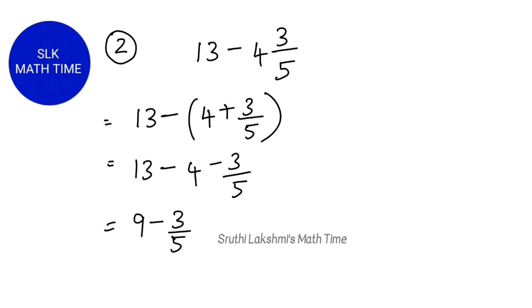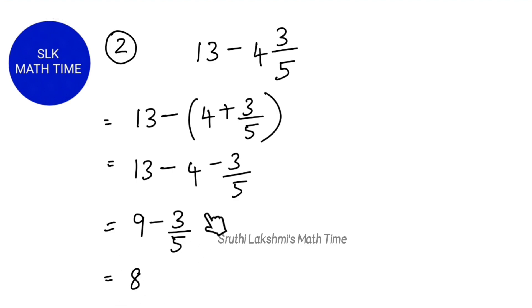So now we have 9 minus 3 by 5. What is 1 less than 9? 9 minus 1 is 8, so we write down 8. And then 5 minus 3 is 2, so we get 8 and 2 fifths. The answer here is 8 and 2 fifths.